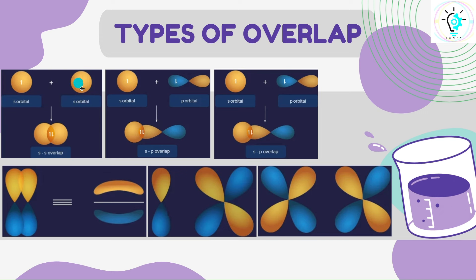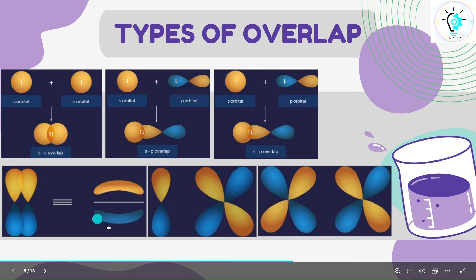These are the types of orbital overlaps. The S orbital is spherical in shape, so when two S orbitals overlap, we get an SS overlap. When S and P orbitals overlap, this gives the SP overlap position. When P orbitals overlap — PX and PY — we get the PP overlap shape. When a P orbital overlaps with a d orbital, we get another overlap pattern, and d orbitals can also overlap with each other.